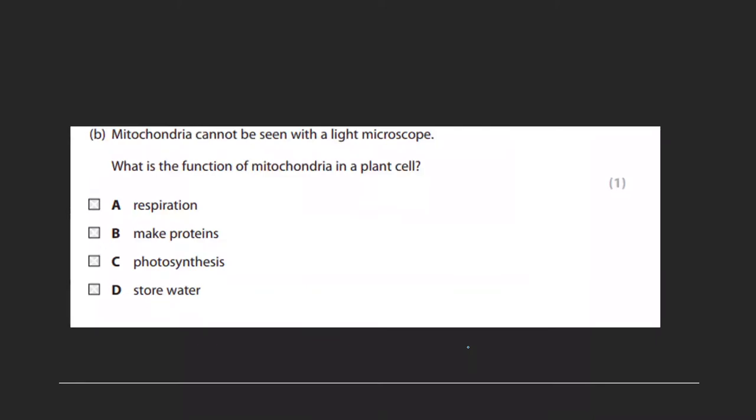Mitochondria cannot be seen with a light microscope. So what is the function of a mitochondria in a plant cell? Right, so it's out to trick people, isn't it? It's also for respiration, like it's in animal cells. So it doesn't store water, doesn't make proteins. Photosynthesis is the chloroplast. It's putting there to trick you. Because plants also undergo respiration. So be careful of those ones.